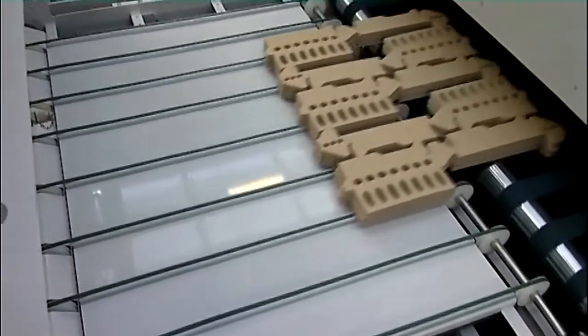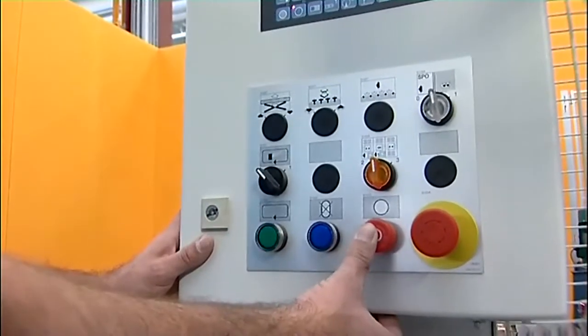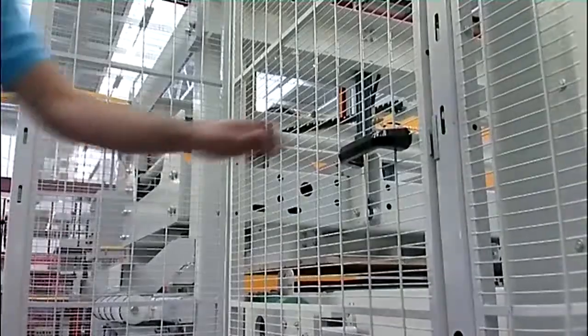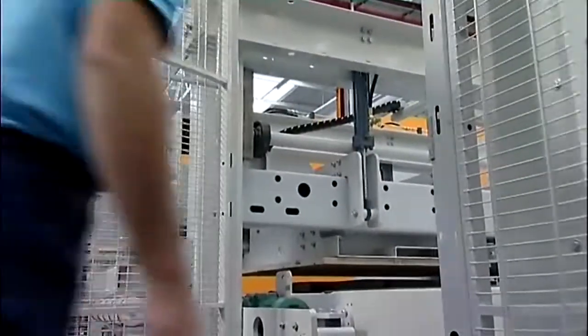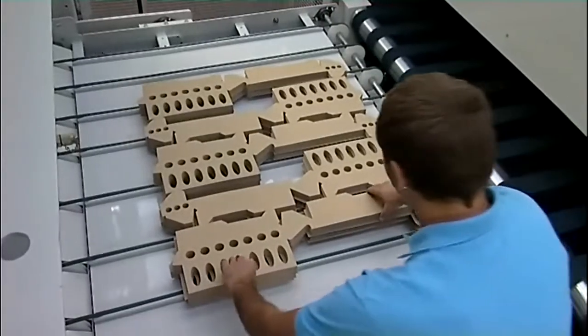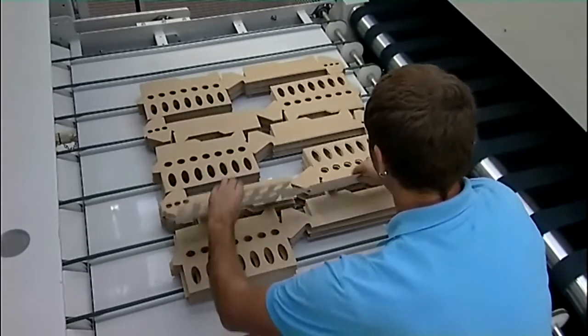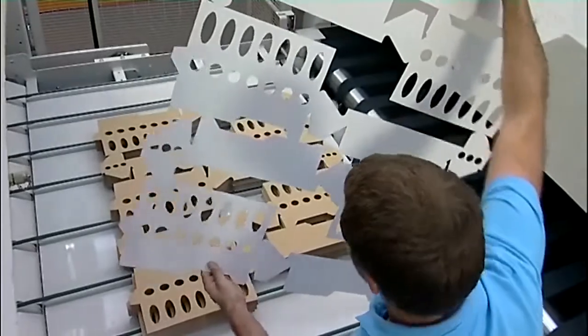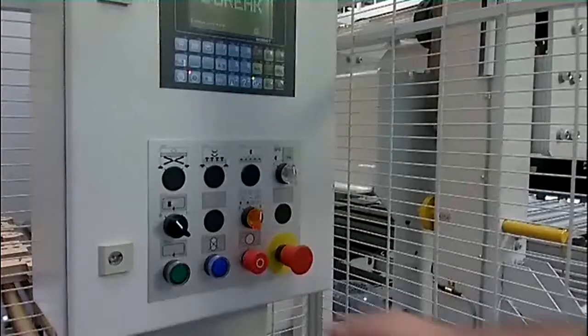Thanks to its ease of access, the G-brake is simple to operate. At any time, the operator can stop a batch on the intermediate table and intervene in complete safety to control production. After the intervention, the separator goes back into production.